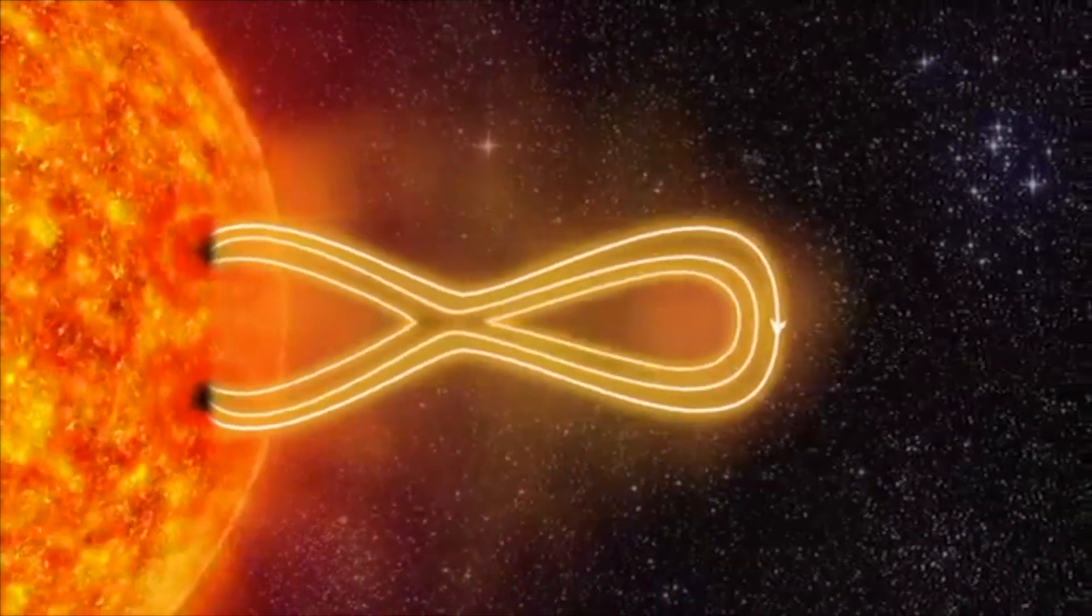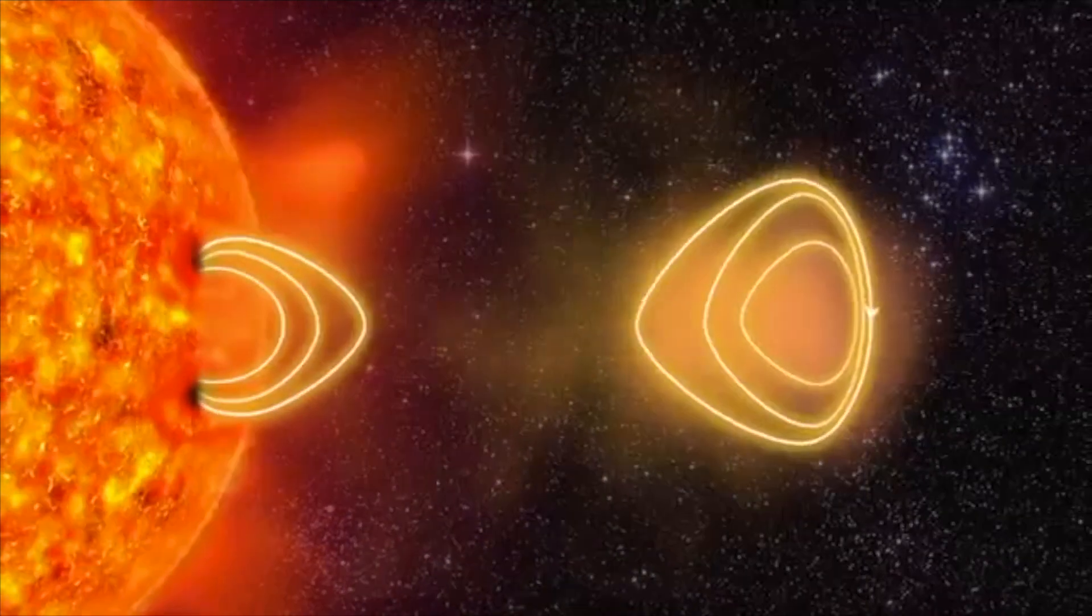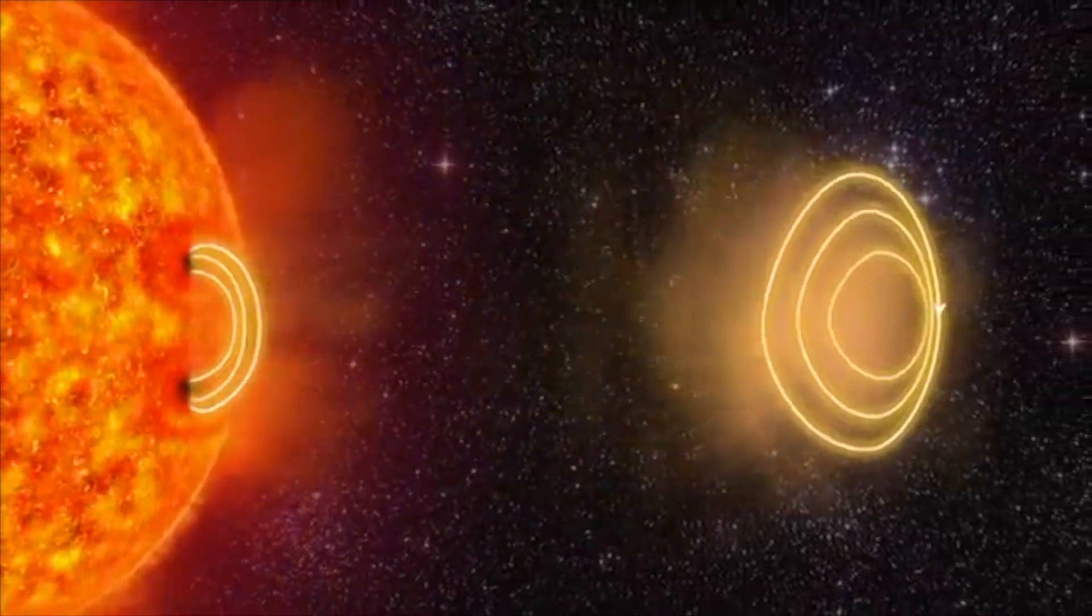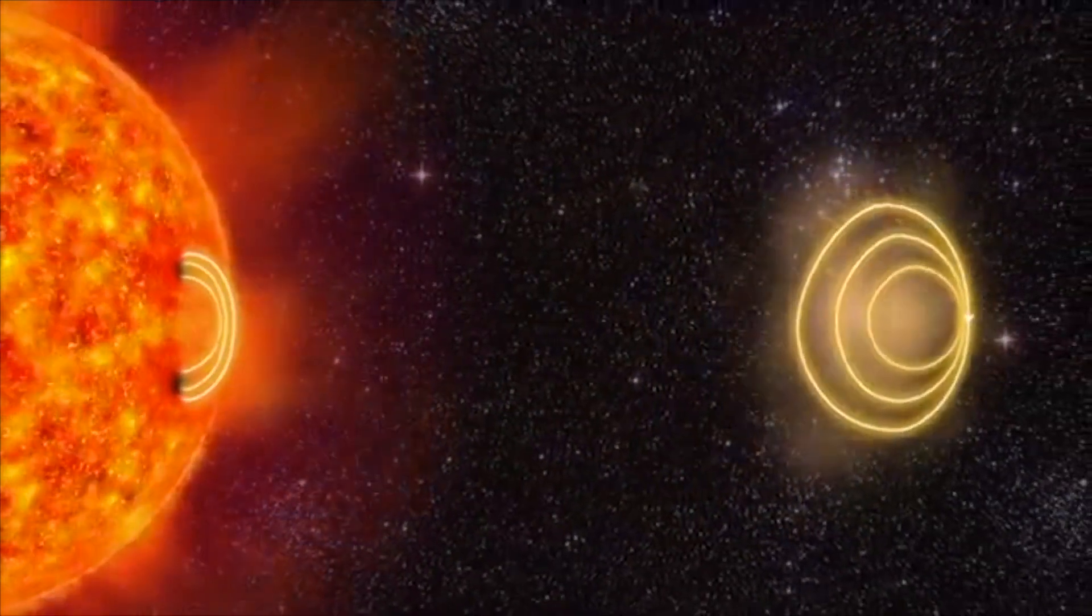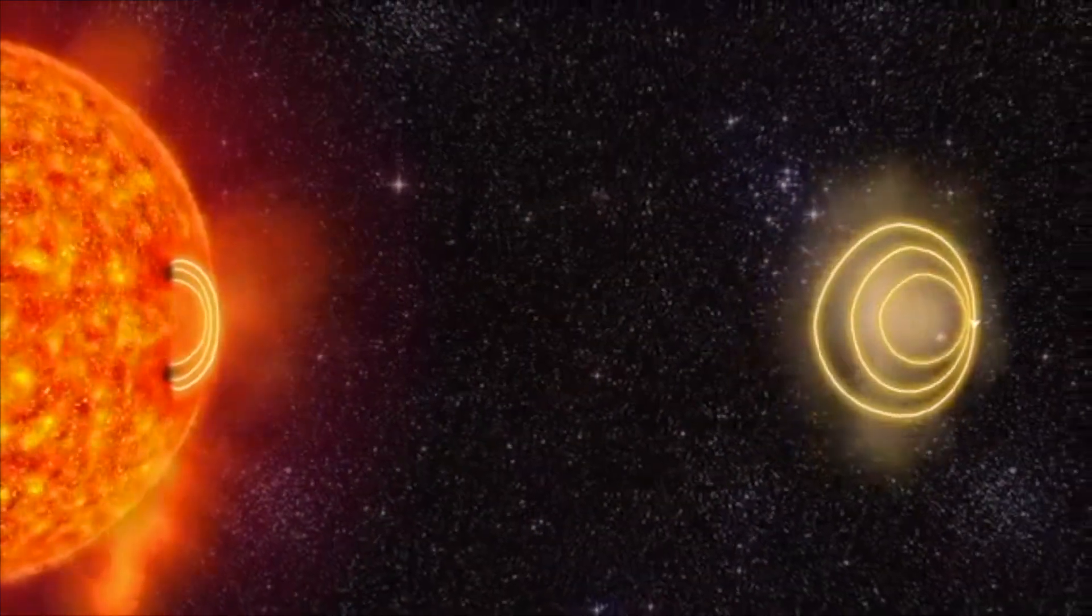And then the rubber band breaks. Several billion tons of plasma is hurled out from the sun. This is called a solar storm.